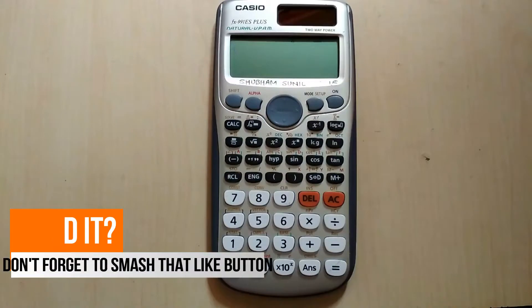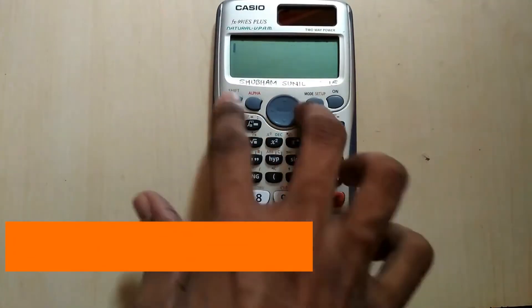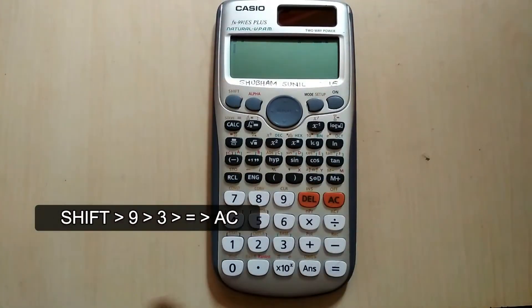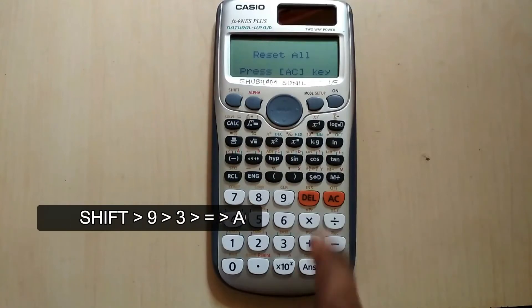Next thing I am going to show is how you can reset your calc if something is wrong or you are getting wrong answers. Just press shift 9, 3, equal to, 3, equal to, and AC, and you have reset your calc.